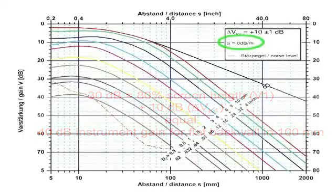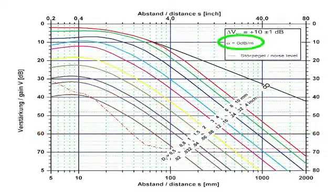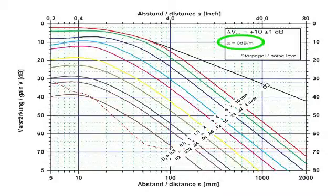One last comment regarding sound attenuation. On each of GE sensing and inspection technology's DGS diagrams, the remark alpha equals 0 dB per meter can be found. This means that the given diagram is only valid for attenuation-free test materials. Since this is an ideal assumption, the user is obliged to know the specific sound attenuation of the material they are testing and must correct all echo amplitudes if their material attenuation is not negligibly small.